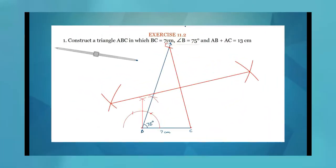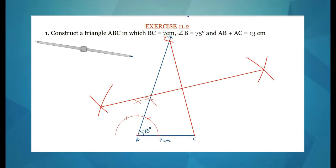In this video, we are going to do question number 1 of Exercise 11.2 in NCERT Class 9 Mathematics. The question is: construct a triangle ABC in which BC is equal to 7 cm, angle B is equal to 75 degrees, and AB plus AC is equal to 13 cm.